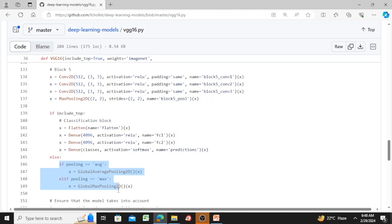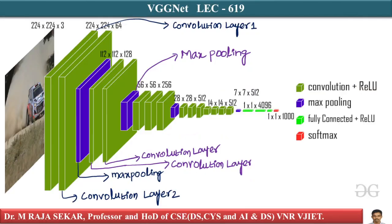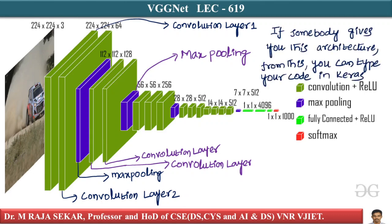The beauty of Keras is that if somebody gives you an architecture diagram like this one, you can type your code in Keras literally in 10 minutes and then compile it. The quality of the pre-built Keras implementation is very good.